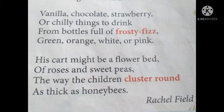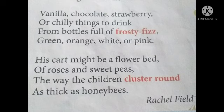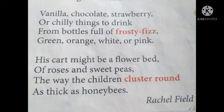The way the children cluster around — jis tarike se jab uska cart wahaan galiyon mein pahunchta hai, children jo hote hain cluster round ho jaate hain, means gather around. Sab koi uske paas aa jaata hai ice cream lene ke liye. Has thick as honey bees — jaisi phool pe honey bees, madhu makkhiyaan, phoolon ke paas aa jaati hain — waise hi ice cream man ke cart ko dekhte, bacche sab uske paas daurte daurte aa jaate hain ice cream khaane ke liye.